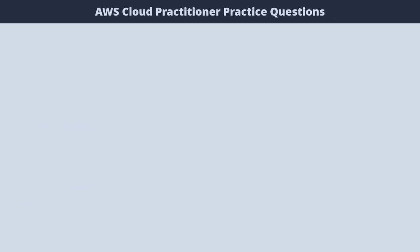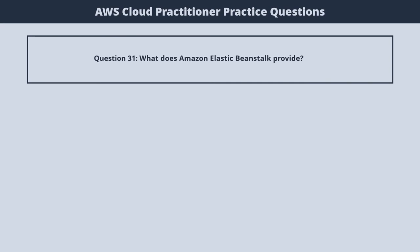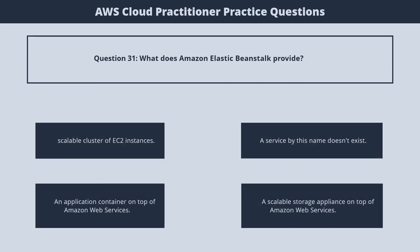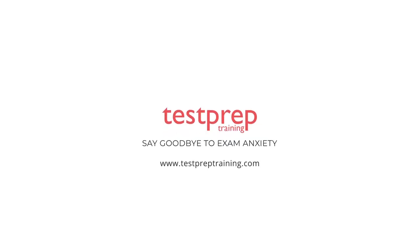Question 31. What does Amazon Elastic Beanstalk provide? 1. A scalable cluster of EC2 instances. 2. A service by this name doesn't exist. 3. An application container on top of Amazon Web Services. 4. A scalable storage appliance on top of Amazon Web Services. The correct answer is 3. An application container on top of Amazon Web Services. For more such videos, subscribe to our channel.